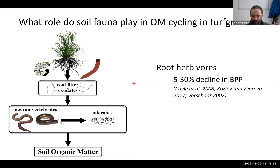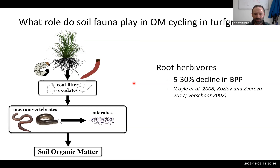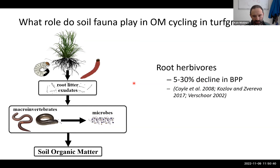I want to keep reminding everyone about root herbivores in soil because they play an important role in shaping organic matter inputs. Work has shown they can change below ground biomass and primary productivity by five to thirty percent. If you take a living root zone, sever it off through feeding, and introduce feces or shed dead material, that's a pretty big and drastic change in organic matter input — going from a living to a dead pool of organic matter just based on one feeding event.